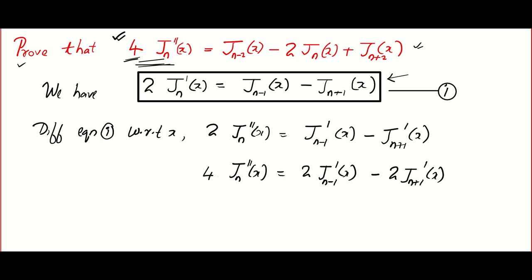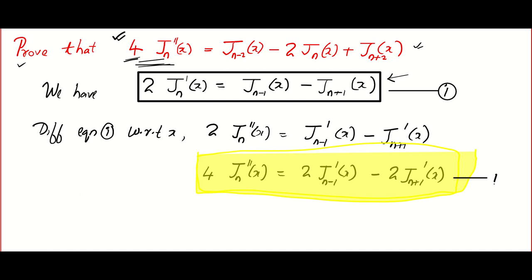I'm going to color it in yellow and call it equation number 2. Now I want to focus on the right-hand side. On the right-hand side you can see terms with n-1 and n+1. I'm going to bring that right-hand side now — here is the twist in the problem.